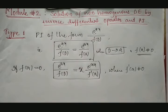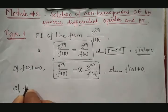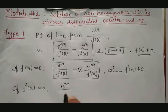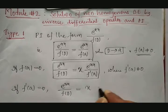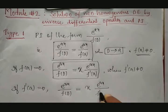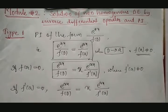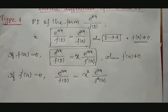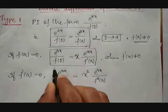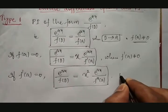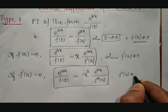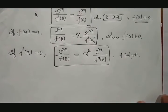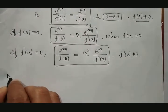Suppose f'(a) also becomes 0, then we get e^(ax) / f(D) = x · e^(ax) / f'(D). Once again the denominator is differentiated, and as a compensatory part, one more x is multiplied, making it x squared. The condition is now that f''(a) should not be equal to 0. If it is again 0, this process continues to get the particular integral.